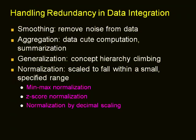Generalization, by replacing low-level attribute values with higher-level values as per the concept hierarchy, is also a form of transformation — for example, street is replaced by city or country. Another transformation type is normalization, which replaces one set of values in a range with another set, reducing the number of possible values. Popular normalization methods are min-max normalization, z-score normalization, and normalization by decimal scaling.